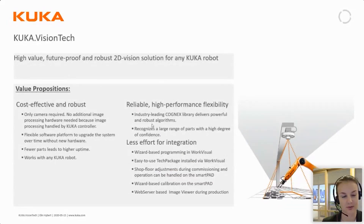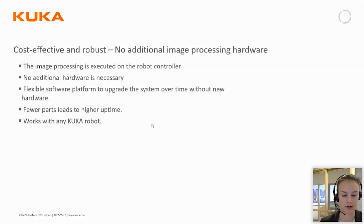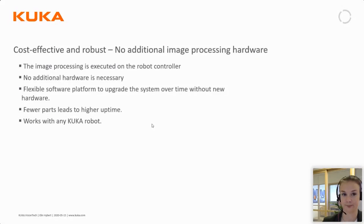What are the benefits of using VisionTech in your production? The benefits come in cost effectiveness — it requires only the camera and no additional image processing hardware if you don't select the KUKA Industrial PC. The image processing is handled by KUKA and it works with all KUKA robots, so it's not a robot-dependent software. The high reliability and high performance flexibility is an effect of the Cognex library on the Cognex camera that is included in the software.